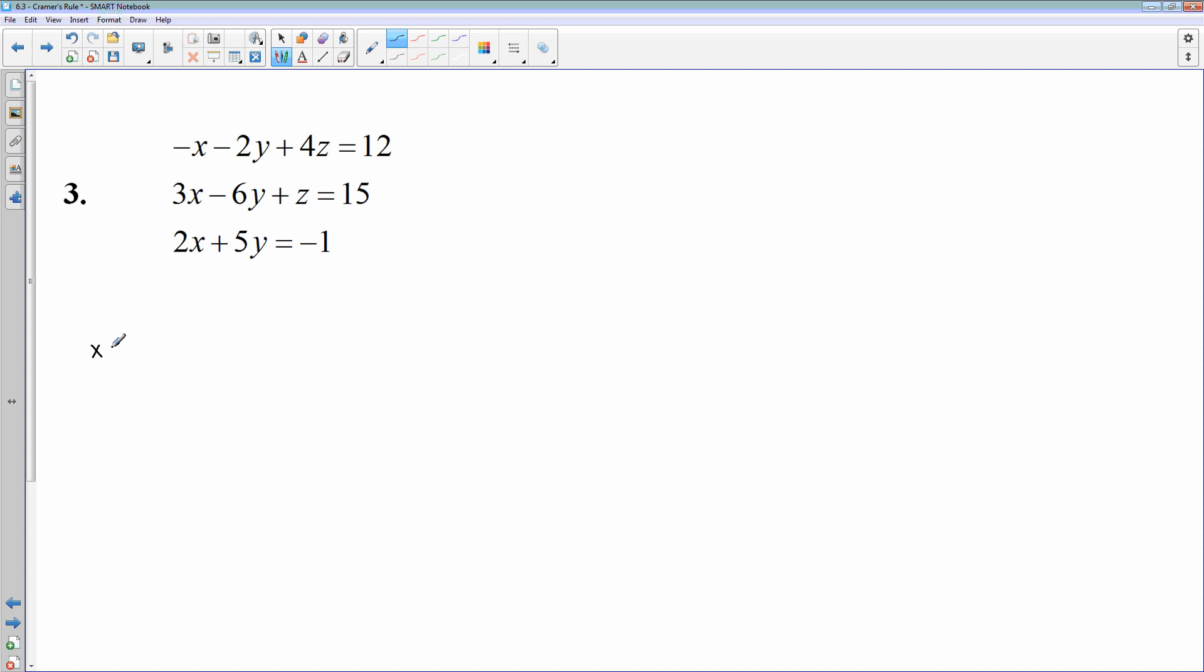And X is going to be, my bottom matrix is going to be my normal coefficients. So negative 1, negative 2, and 4, 3, negative 6, and 1, 2X plus 5Y, so positive 5. There's no Z, so we need to put a zero place filler. And then the numerator, since I'm solving for X, we're going to replace these X values with these numbers on the right side. So 12, 15, and negative 1 will replace those. And then we'll do negative 2, negative 6, 5, 4, 1, 0. And we'll find the determinant at the top, determinant at the bottom, we'll divide. That'll give us our answer.